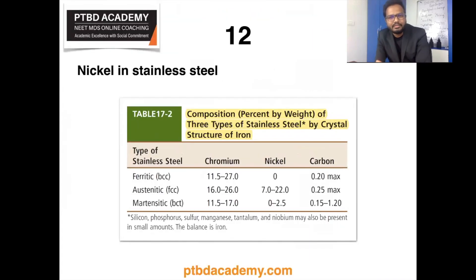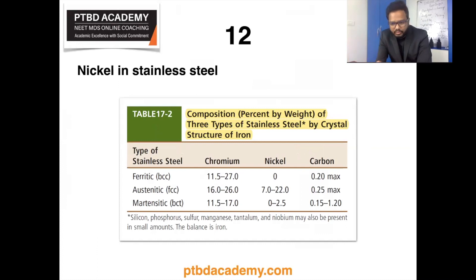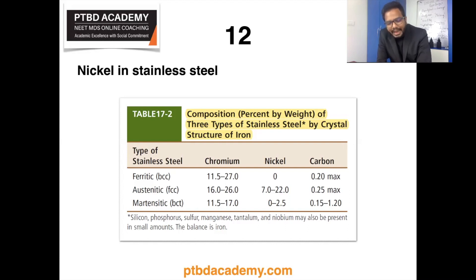What's the use of nickel in stainless steel? You can clearly see the types of stainless steel and their composition including percentage. Austenitic stainless steel contains more nickel comparatively. Addition of nickel to iron-chromium carbon composition stabilizes the austenite phase on cooling. Type 18-8 stainless steel contains 18% chromium and 8% nickel by weight, and is the most commonly used alloy for orthodontic stainless steel wires and bands.